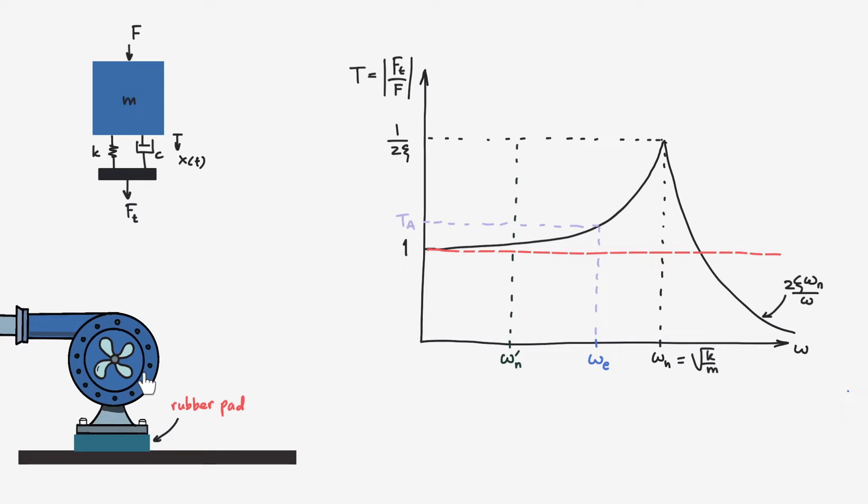Then if we run the machine again from low to high speed, we have the new transmissibility graph. So now at the same excitation frequency as before, we have a lower level of transmissibility tb, which is now less than one. This means the transmitted force to the receiver is less than the excitation force by the machine.